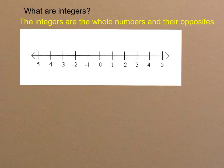We can visualize integers on a number line like this. 0 is a whole number, so it's also an integer.